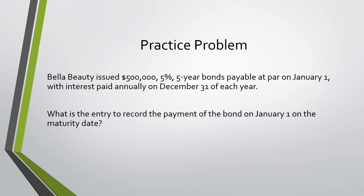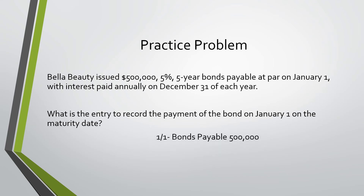The next one asks: what is the entry to record the payment of the bond on January 1st? We would debit bonds payable because we're removing that off our books, and credit cash because we are paying it.